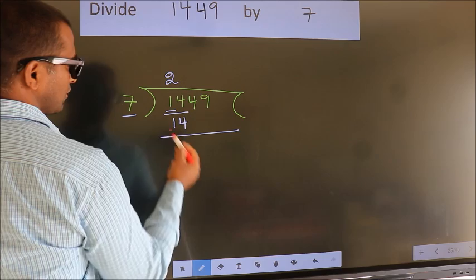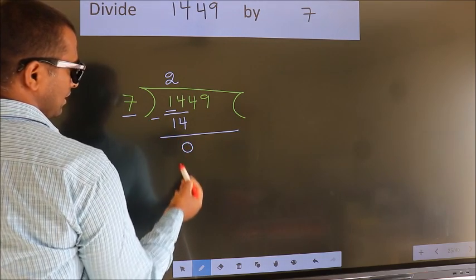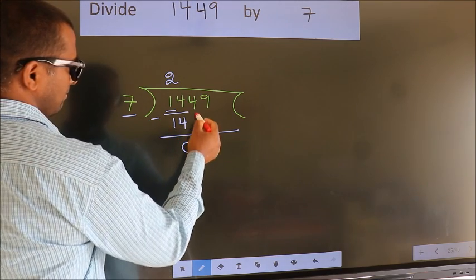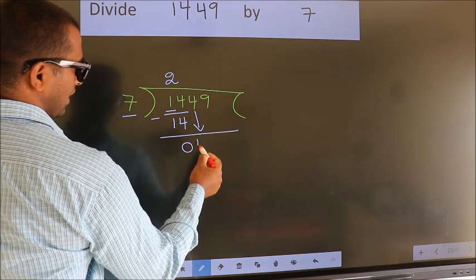Now we should subtract. We get 0. After this, bring down the next number. So 4 down.